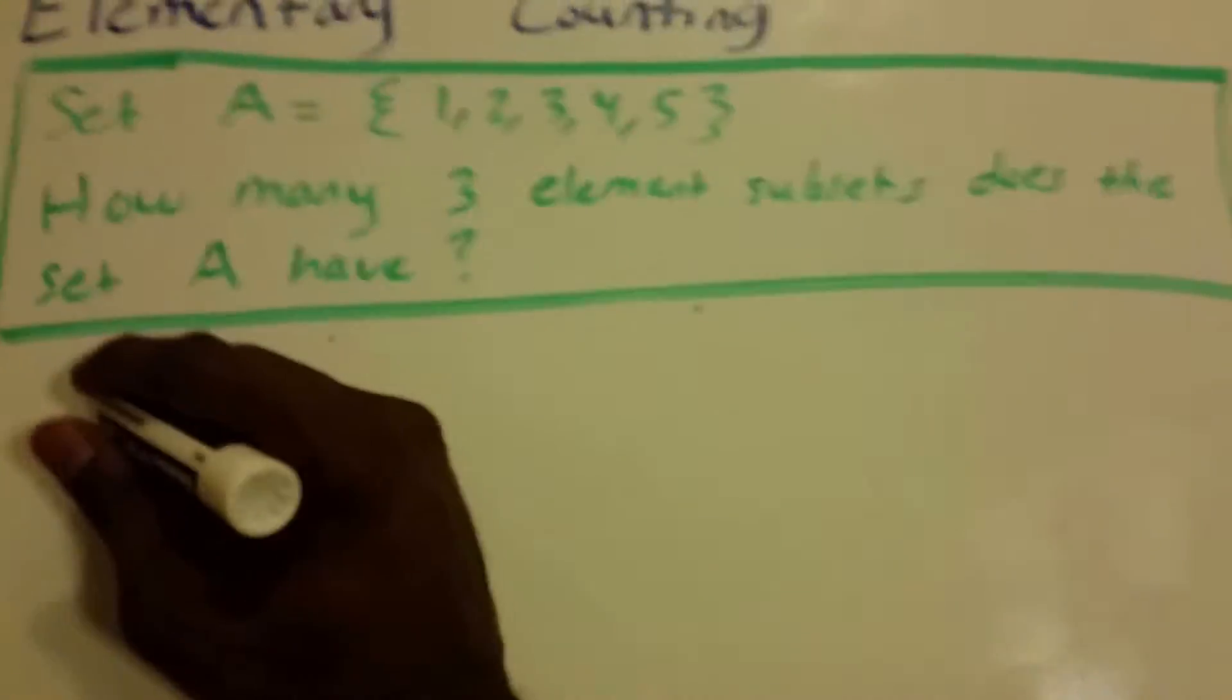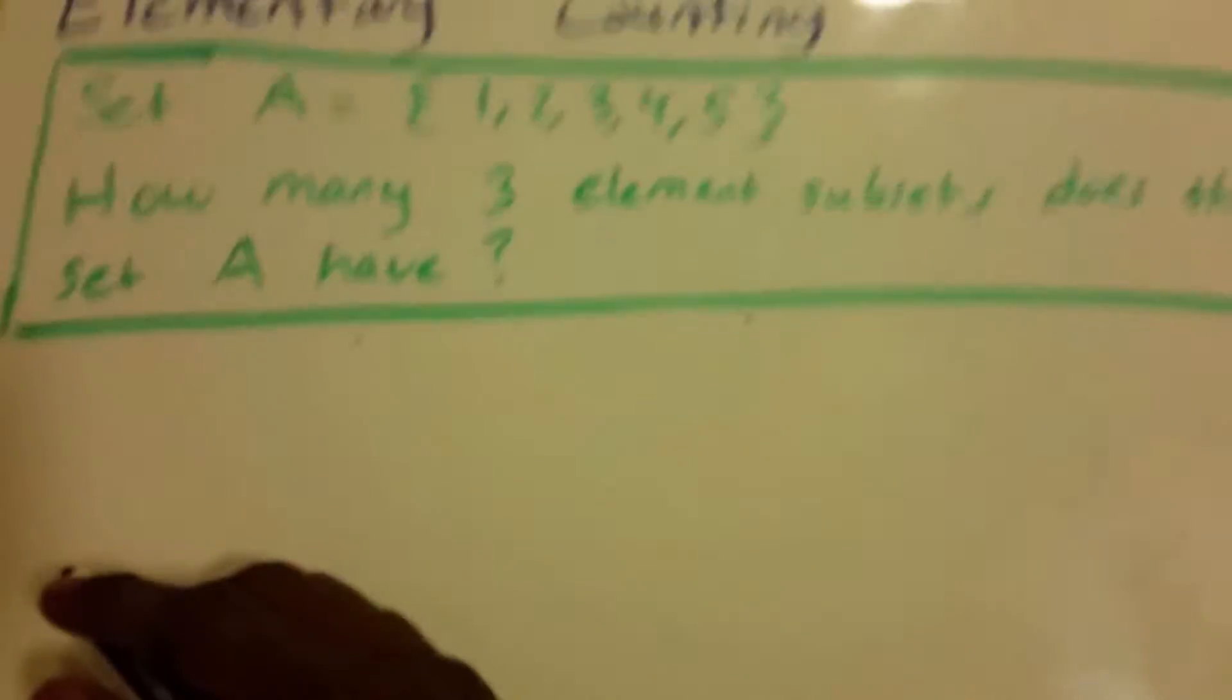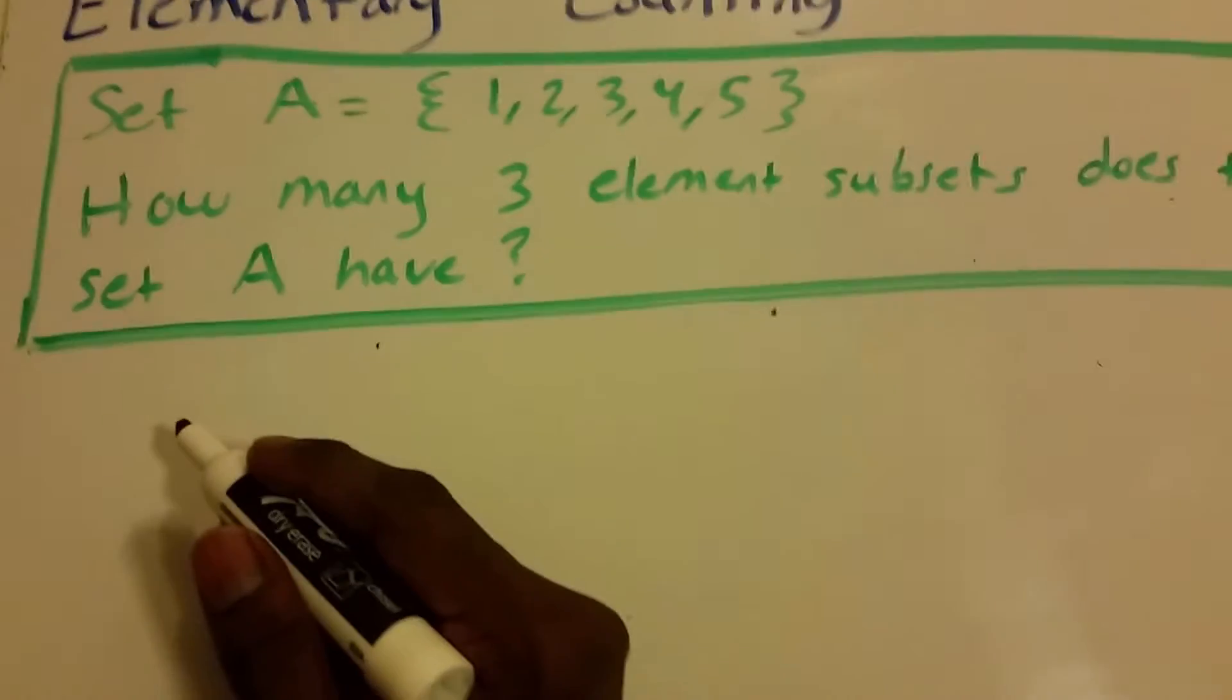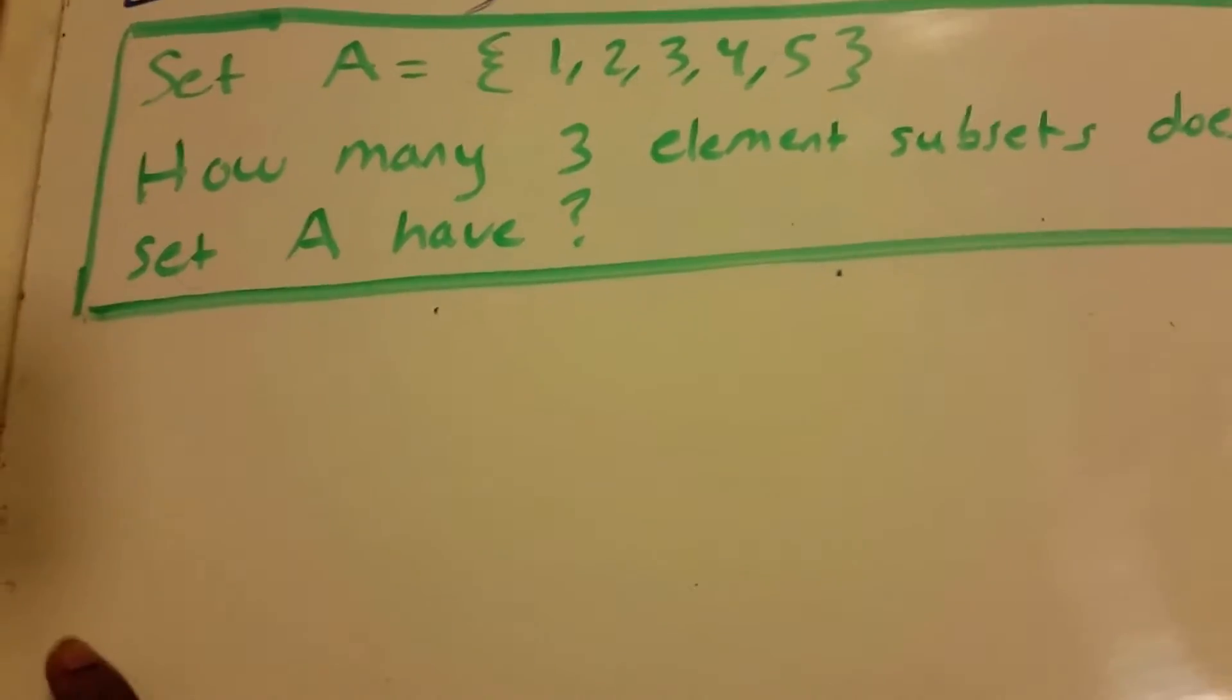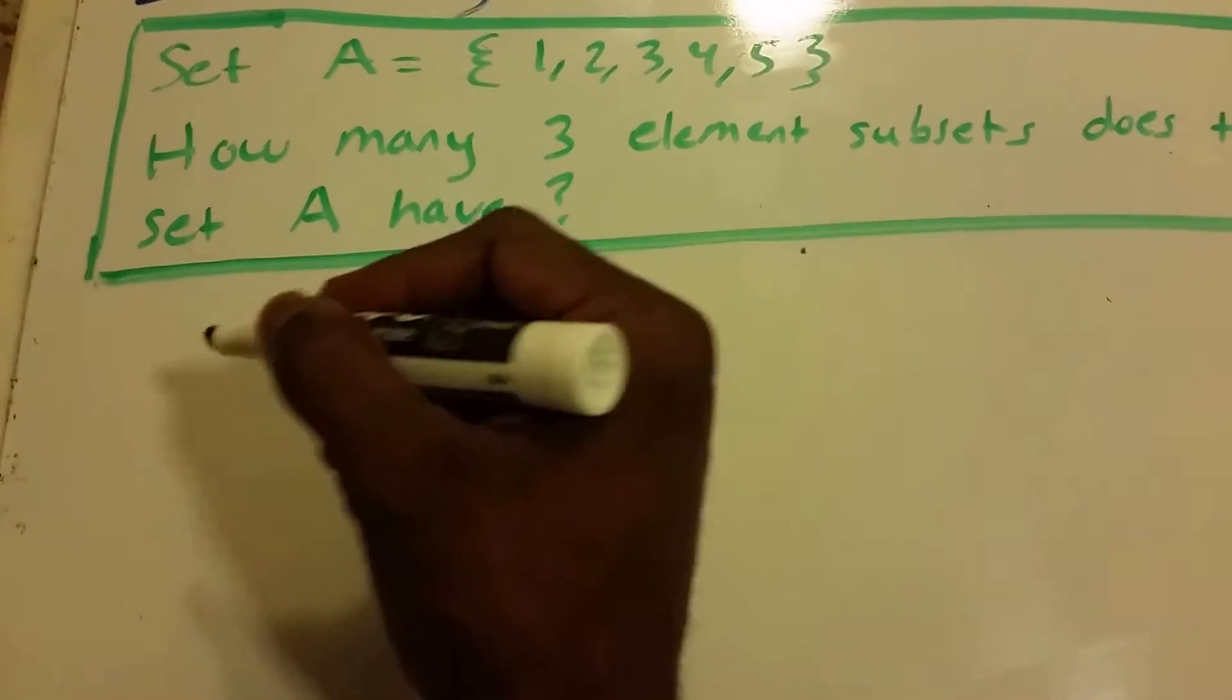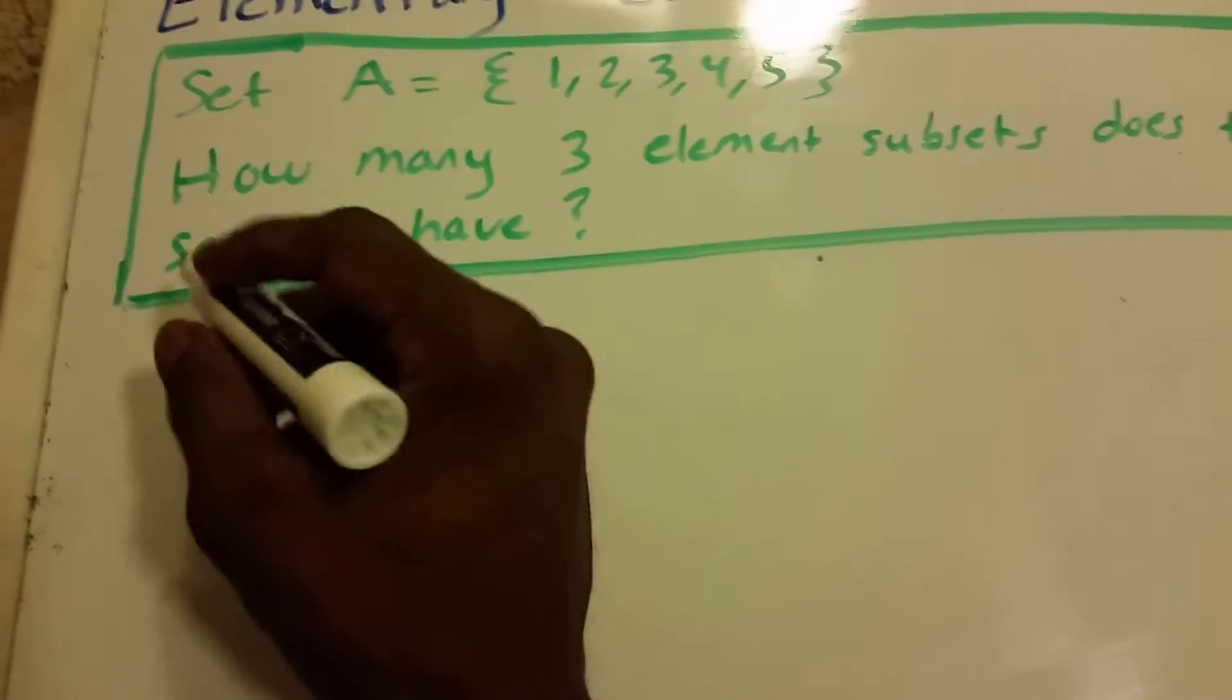Alright, so before we even get started here, we have to know which formula we're going to use. Are we going to use the combination formula, or are we going to use the permutation formula?